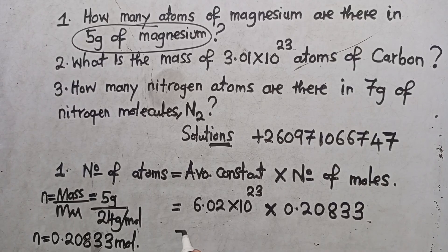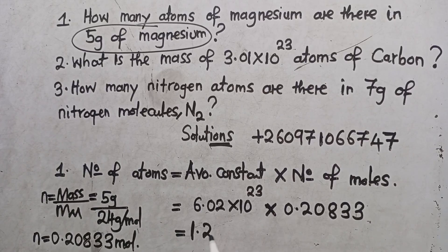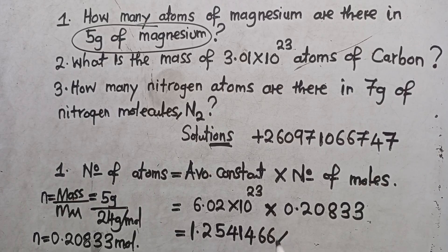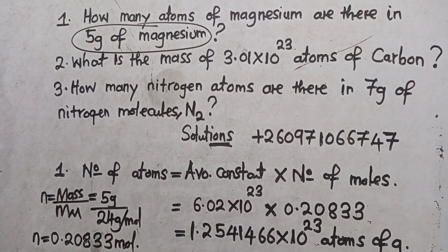So if I multiply, the answer I'm getting here is: 6.02 times 10 to the power 23, multiplied by 0.2083. What answer are we getting? The answer we are getting is 1.25466 times 10 to the power 23 atoms of magnesium.